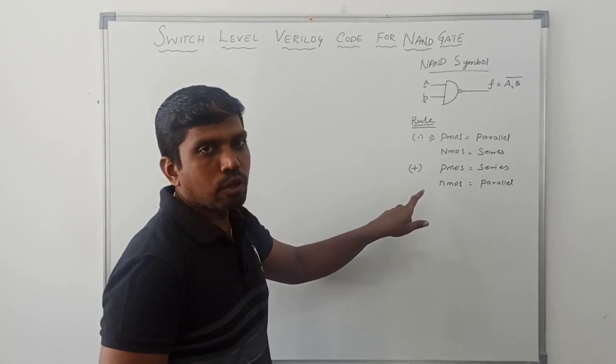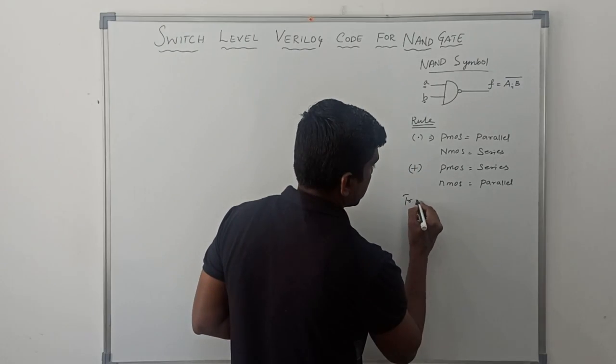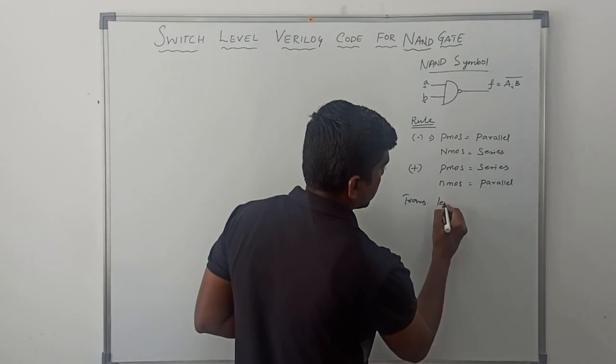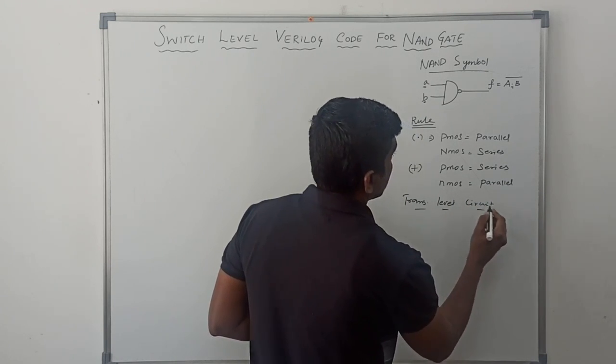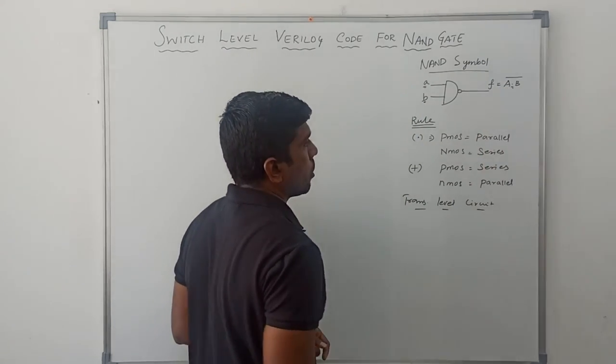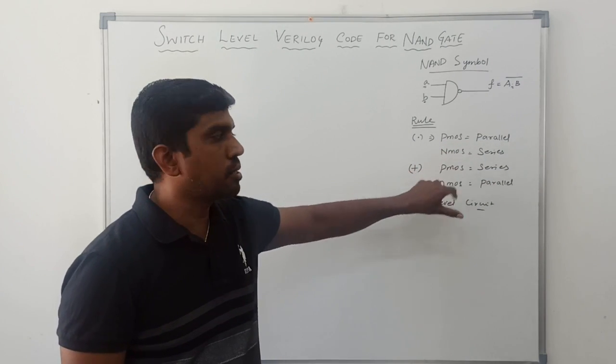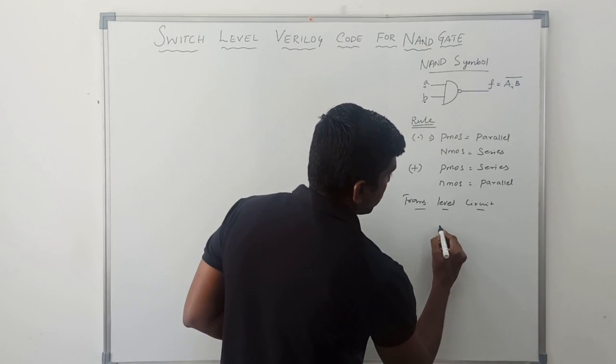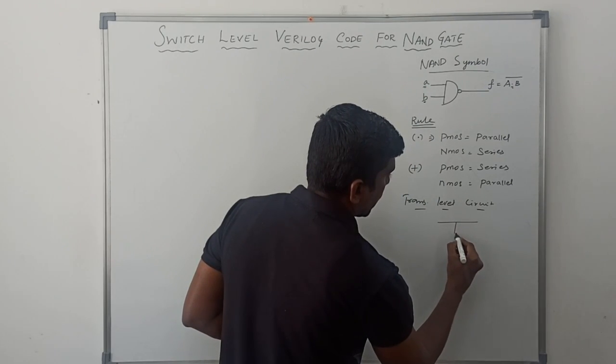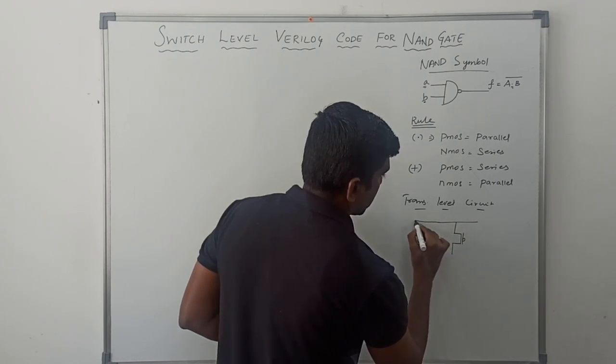Now, I am going to draw the transistor level circuit using these two rules. In this Boolean expression, we have dot operator. Dot operator means PMOS transistor connecting parallel, NMOS transistor connected series. In this NAND gate, we have two input variables. I need two PMOS transistors and two NMOS transistors.